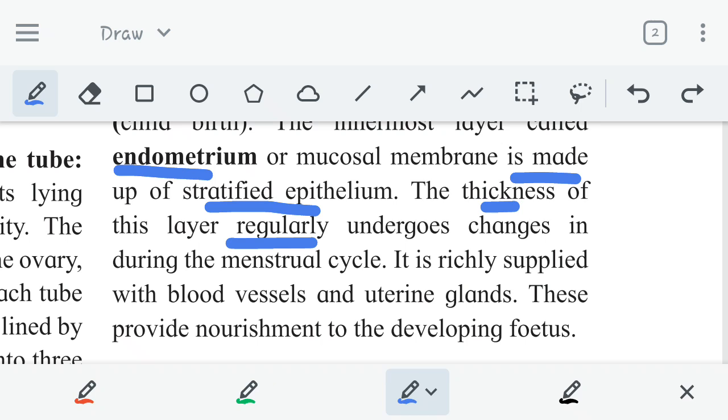The menstrual cycle ends up with the discharge of blood and tissue coming out of the endometrium. The layer of endometrium continually undergoes thickness change. It is experiencing the change in thickness because of the menstrual cycle. At the end, the menstrual cycle means a lot of tissue and blood comes out of the vagina during discharge after the menstrual cycle. And it is richly supplied with blood vessels so that the upcoming fetus or the upcoming baby will be provided with sufficient nutrition during the embryonic stage. Uterine glands are also there. These provide nourishment to the developing fetus.